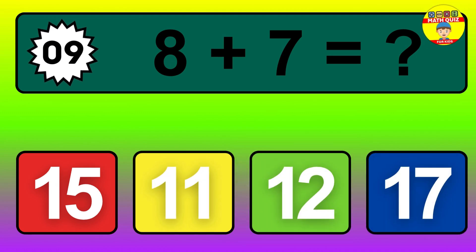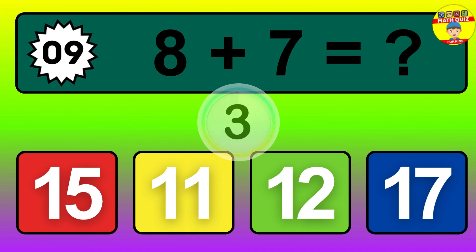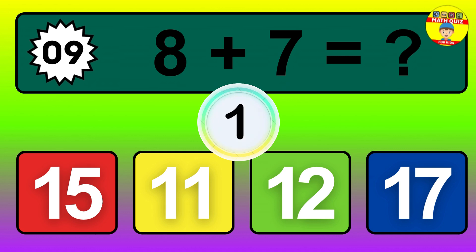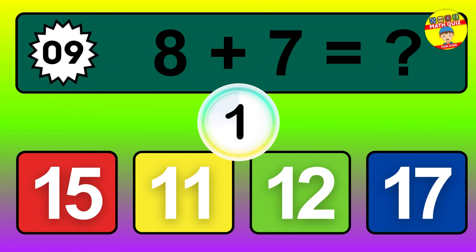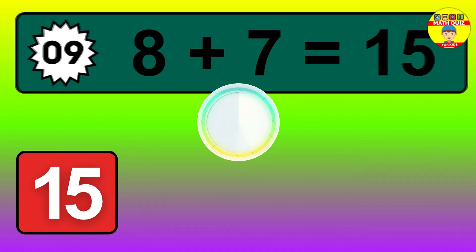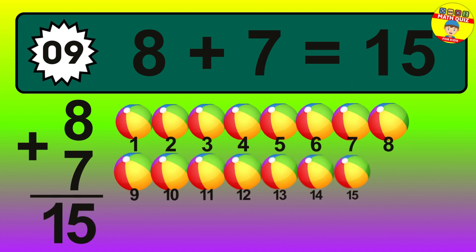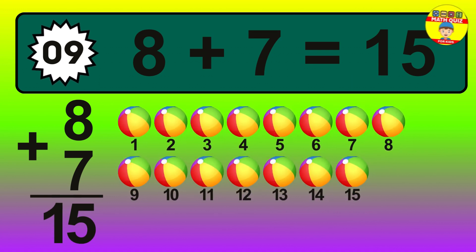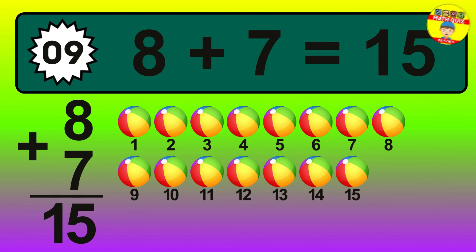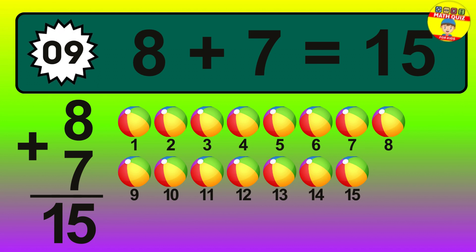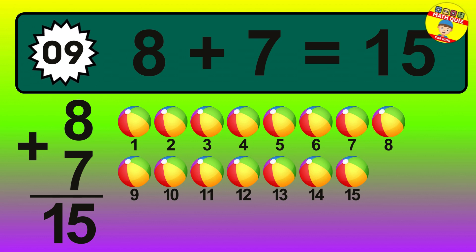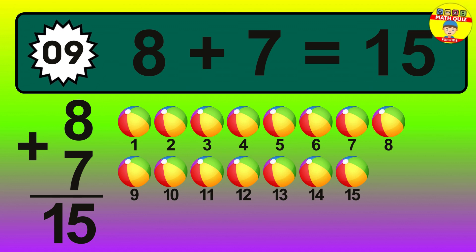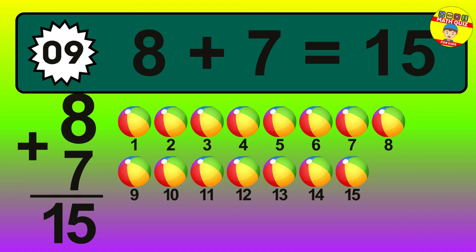Question 9. 8 plus 7 equals what? So the answer is 8 plus 7 is 15. Let's count it. 1, 2, 3, 4, 5, 6, 7, 8, 9, 10, 11, 12, 13, 14, 15.